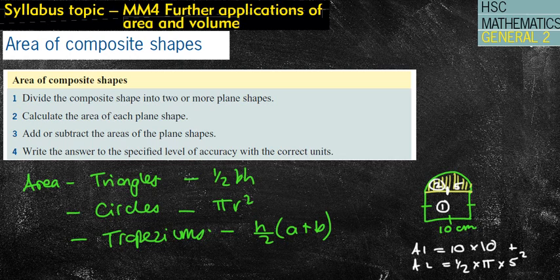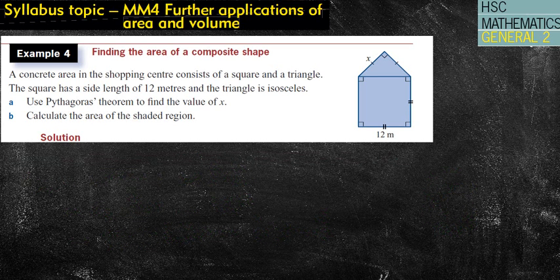Add or subtract the areas of the plane's shapes. So in this case, we would then add those two answers together. Write the answer to the specified level of accuracy with the correct units. That means 1 decimal place, 2 decimal places, nearest centimeter squared, etc. Pretty straightforward, nothing too challenging.